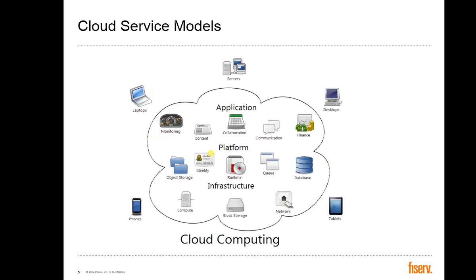There are three types of cloud service models: Infrastructure as a Service, Platform as a Service, and Software as a Service. Infrastructure as a Service is at the bottom of the pyramid. On top of that you define the platform — Platform as a Service — and on top of the platform there are applications that customers can write and sell as Software as a Service.